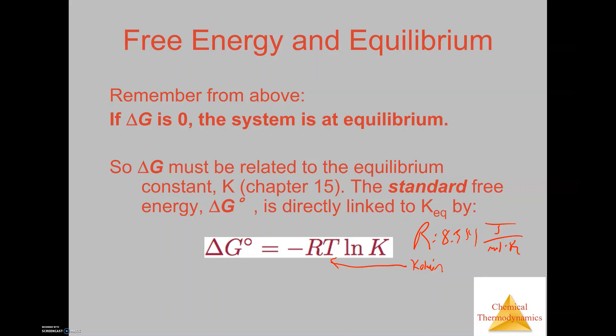The example we did previously was with iron reacting with oxygen to form iron three oxide. In that particular reaction, we determined that the value for Delta G was equal to negative 1,490.2 kilojoules. If we use this Delta G and we plug this in here, we could calculate what the equilibrium constant was for the formation of iron three oxide.